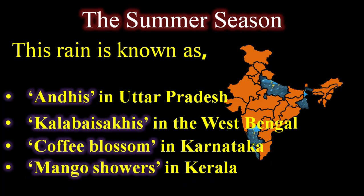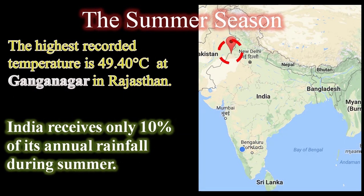In Kerala, the same conventional rainfall is called 'Mango Showers.' The highest temperature recorded is 49.4 degrees Celsius at Ganganagar in Rajasthan. Overall, India receives only 10 percent of its annual rainfall during summer season.